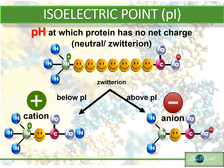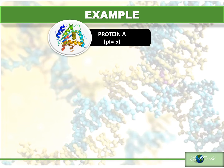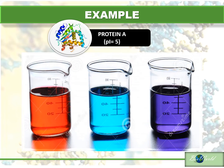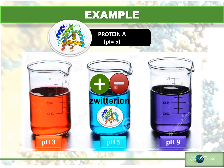Let me show you an example. This protein has a PI of 5. I've prepared three beakers, each having solutions with different pH: pH 3, pH 5, and pH 9. Now what happens when I put protein A in my beaker that has solution pH 5? PI 5 means the pH at which protein A will be neutral. So when it is placed in a pH equal to the PI, this protein will be a zwitterion — meaning that it will have equal numbers of positive and negative charges.